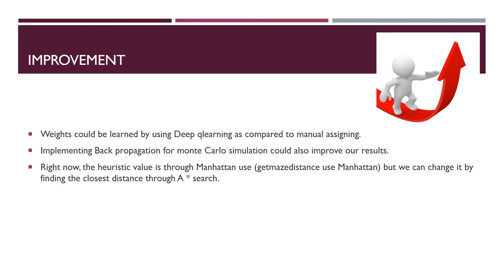The improvements we could make include using deep Q-learning to find better weights, and instead of using Manhattan distance in the defense, we should use A* search to find the minimum distance between the ghost and the food.